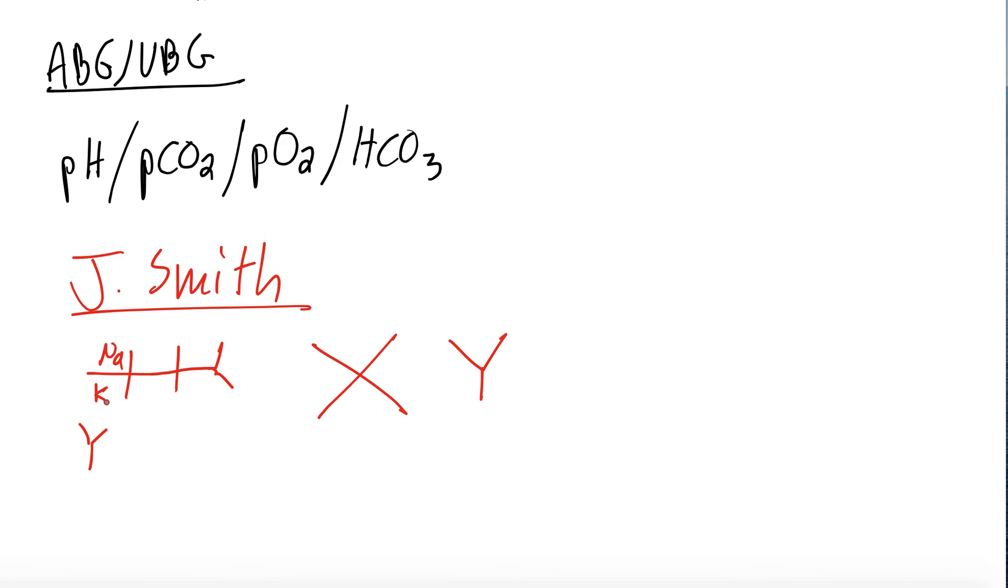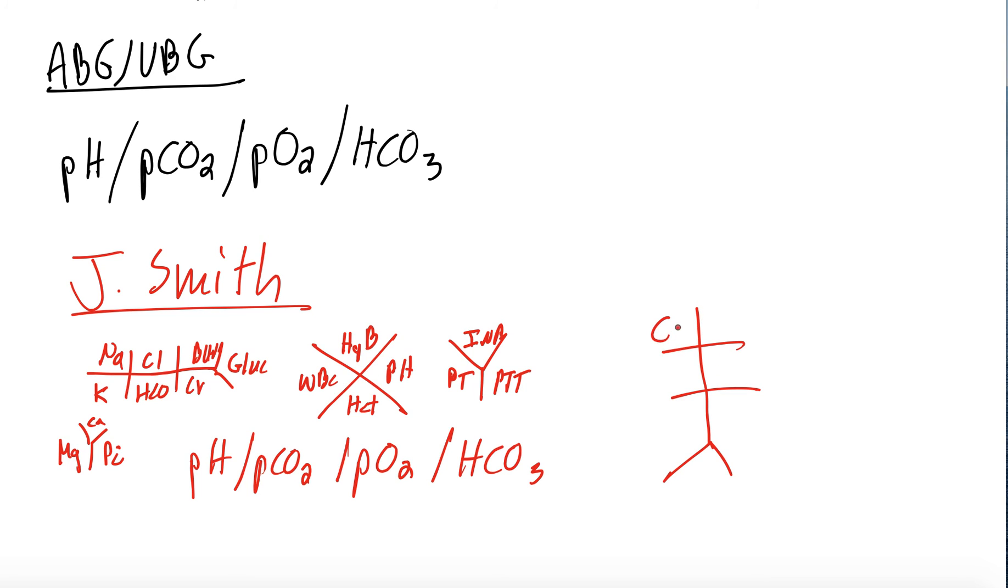I'll label all these: sodium, potassium, chloride, bicarb, BUN, creatinine, glucose, WBC, hemoglobin, platelets, hematocrit, magnesium, phosphorus, calcium, PT, PTT, INR, and then pH, PCO2, PO2, bicarb in the blood gas. And then the last one is going to be calcium, AST, ALT, protein, albumin, alkaline phosphatase, and bilirubin.